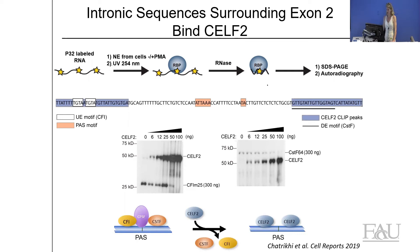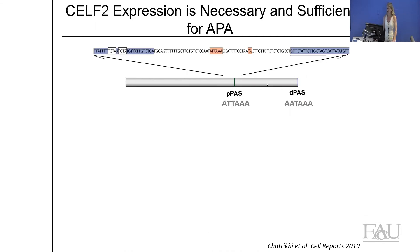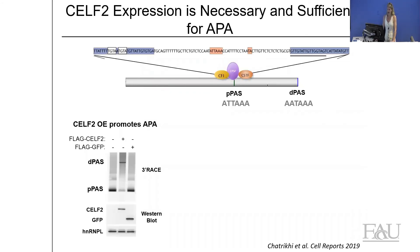This leads to a model where SELF2 knocks off these auxiliary factors, breaking up the polyadenylation complex and causing a loss of that polyadenylation site. To test functional relevance, we used a 3' RACE assay on a native 3' UTR with a proximal poly-A site preferentially used under low SELF2 conditions. When we transfect in SELF2, we see a shift from the proximal site to the distal site, and that is specific to SELF2 as control proteins do not produce the same effect.